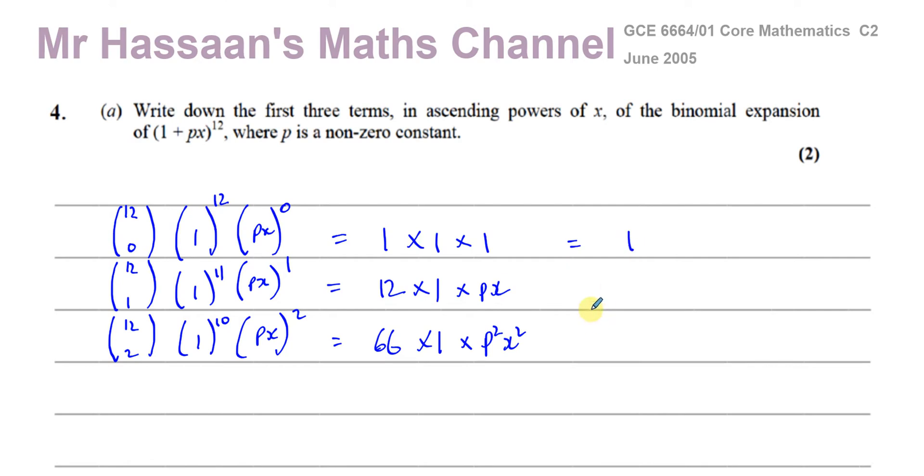So this will give you 1. This is 12, 12 Px, and this is 66 P squared X squared. So we can say that our expression, 1 plus Px to the power of 12.